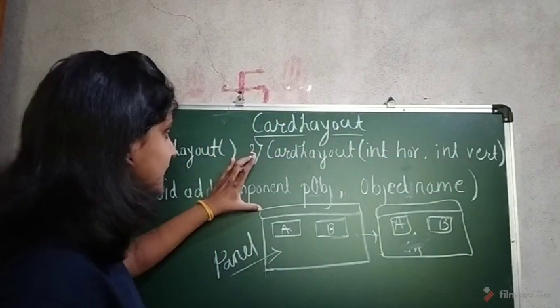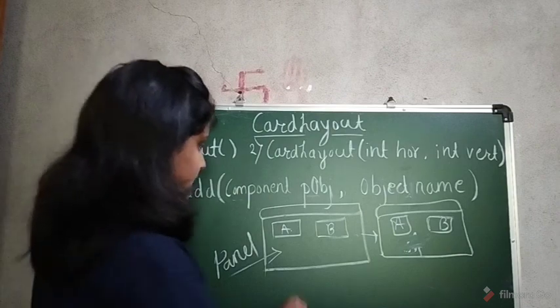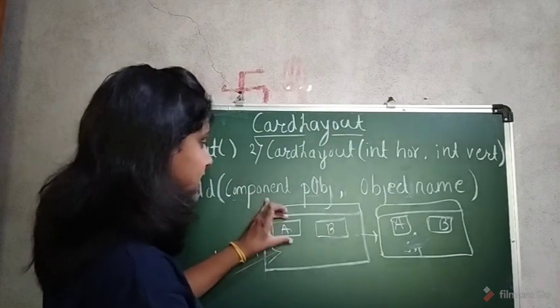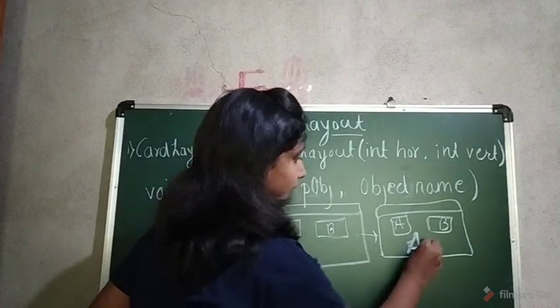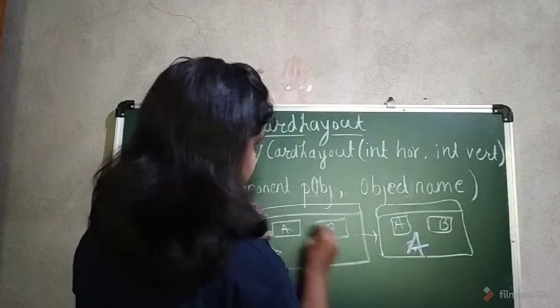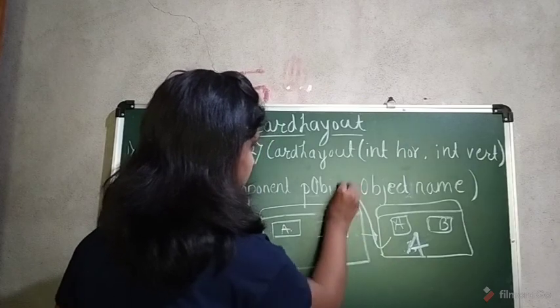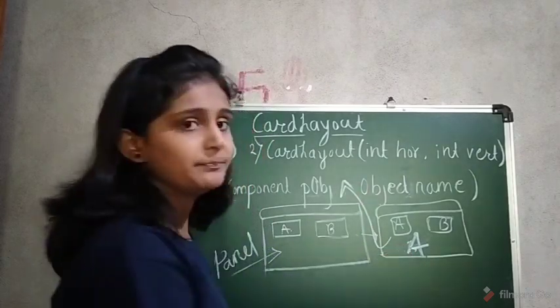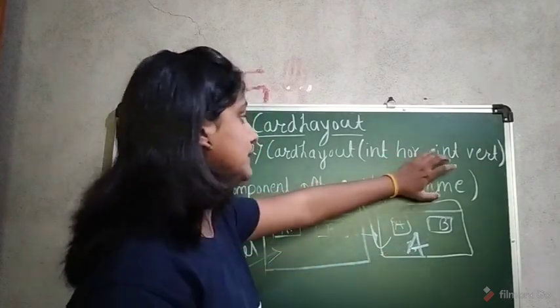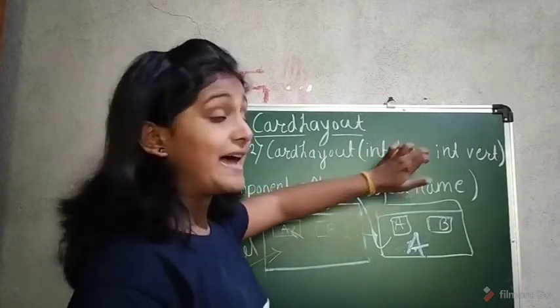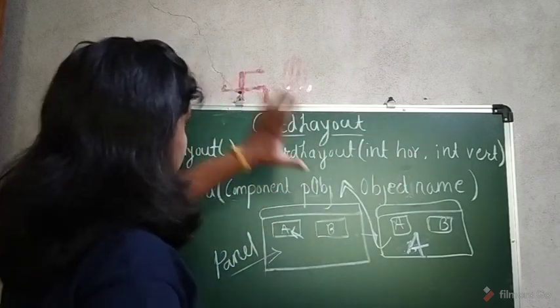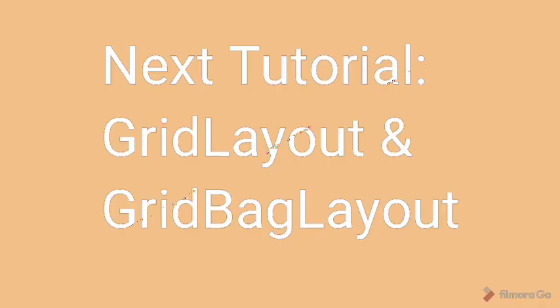The add() method has two parameters: the component, which will hold the panel object, and the object name. For example, when you click button A, the panel corresponding to A is passed as the component object, and the button's object name is passed as the second parameter. In this way we create a CardLayout.